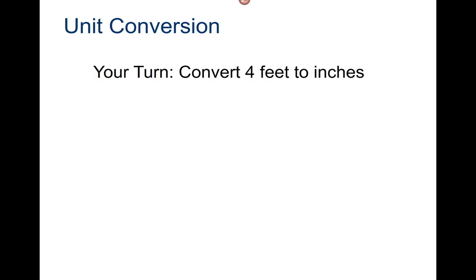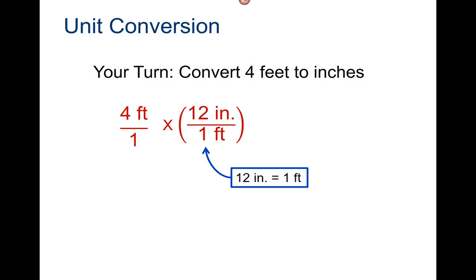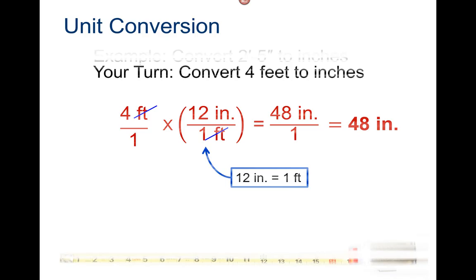Now, convert four feet to inches. Four feet over one, times the conversion factor: twelve inches over one foot. Cancel the feet. Multiply four by twelve — you get forty-eight inches over one, which is equal to forty-eight inches.